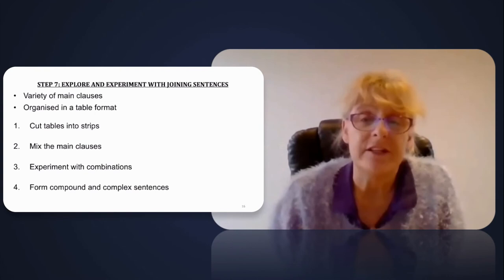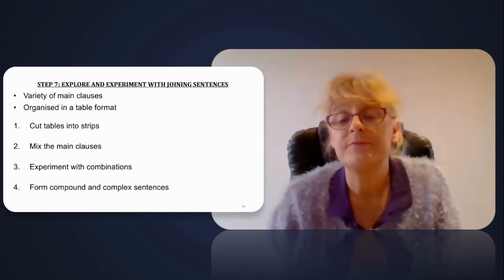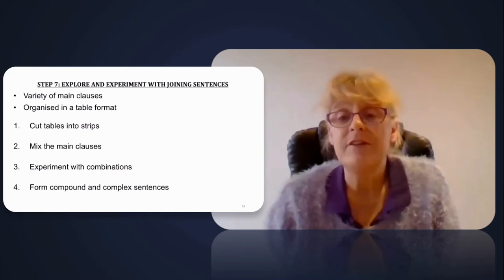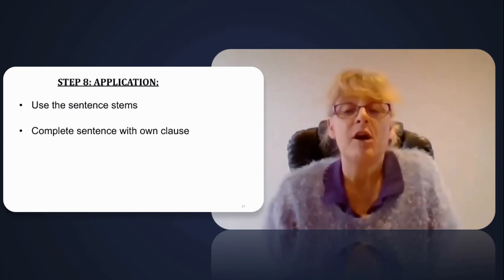Step seven: exploring and experimenting with joining sentences. There are a variety of main clauses and conjunctions organized in a table format. Cut the table into strips and allow pupils to experiment with different combinations of main clauses and conjunctions to form appropriate compound or complex sentences.